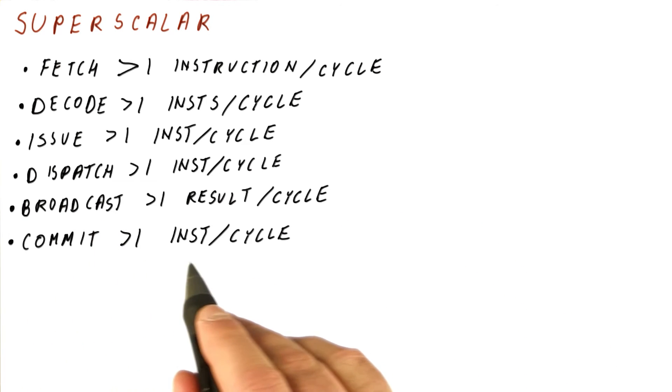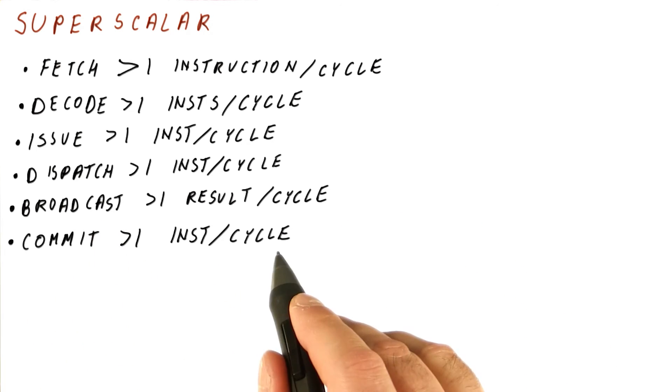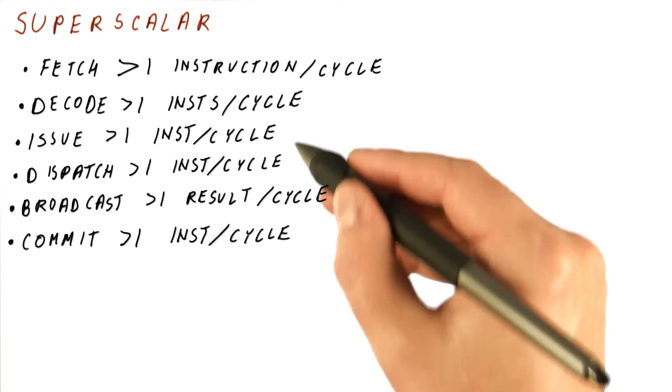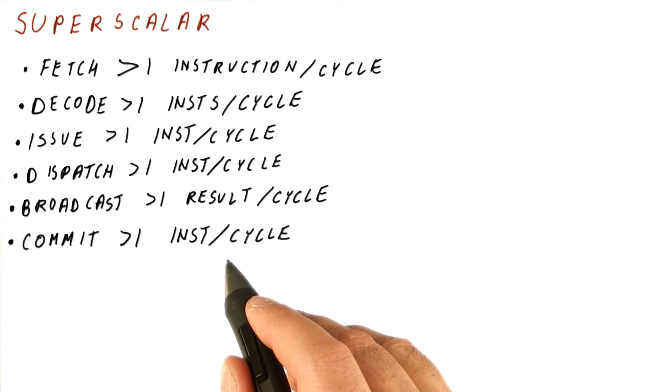And finally, our commit logic needs to be capable of committing more than one instruction per cycle. We have already seen in one of our quizzes that this is very similar to issuing in that for committing, we consider the first instruction that is not committed for commit. If that one can commit, we can consider the next one to commit in the same cycle and so on. So it's not only that we have to consider three instructions for commit and check whether they're done. We also have to make sure that we don't commit, for example, the third instruction we are considering unless both of the previous ones are committed.